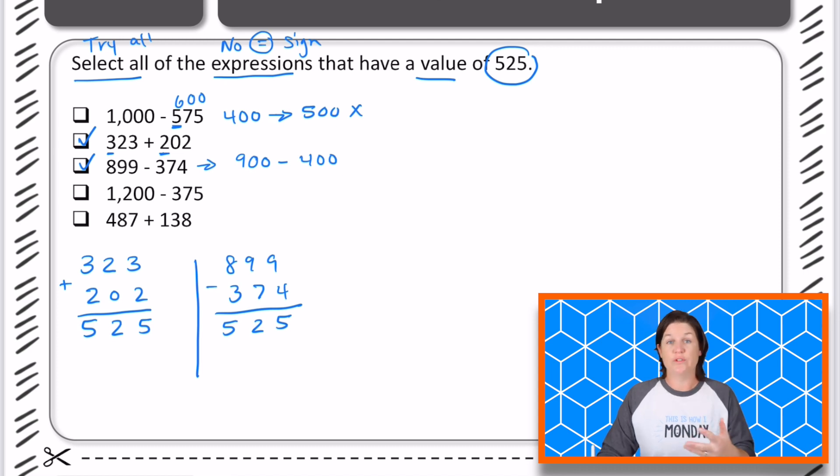Now it could be only two answers, but it could be more. Remember with the multi-select, we're going to work out all of them or try all of them. The next one, we've got 1200 minus about 375. That's pretty close to 400, which would equal 800. That's way too much. I can go ahead and eliminate that one. Now let's say that you solved it out. You solved out 1200 minus 375, and you've got a value of 825. That is still correct. Well, it's not the correct answer, but you still used a strategy to help you eliminate this answer choice.